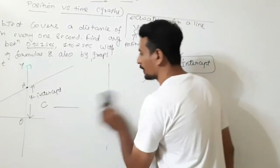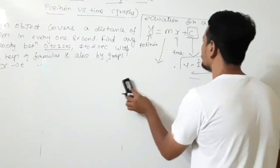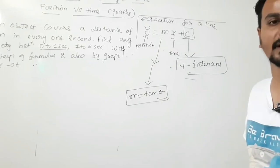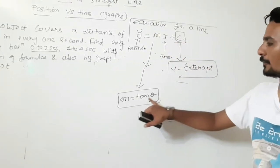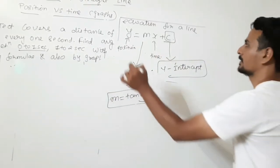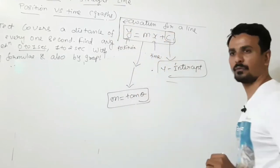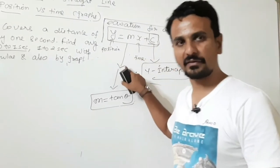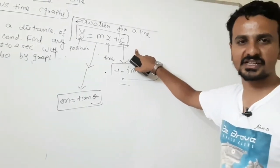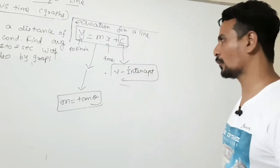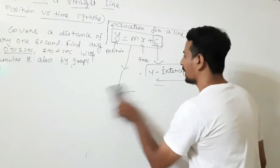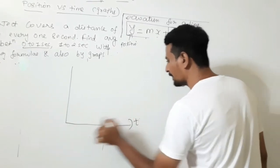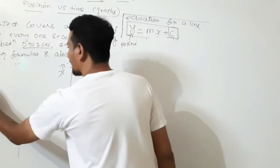Now what do we mean by slope? m means tan θ. tan θ is known as the slope of the graph. How to find the value of θ and how to find average velocity with the help of this graph — we will solve it now. This is the equation to represent a line: y = mx + c. m is the slope, which equals tan θ, and c is the y-intercept, which is the distance from the origin to where the line cuts the y-axis.